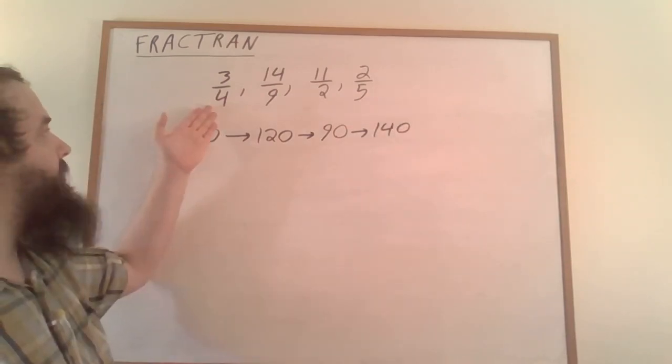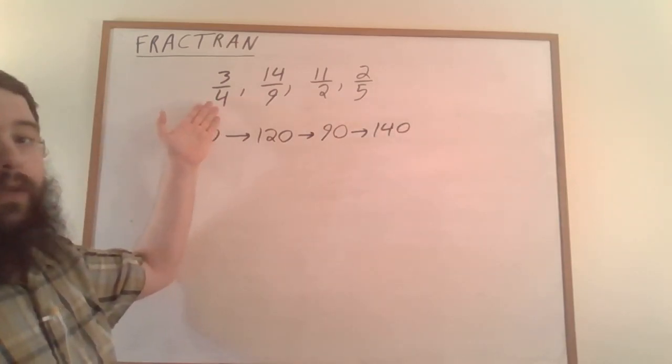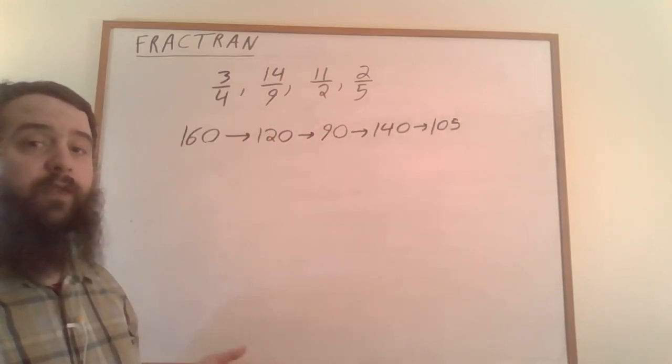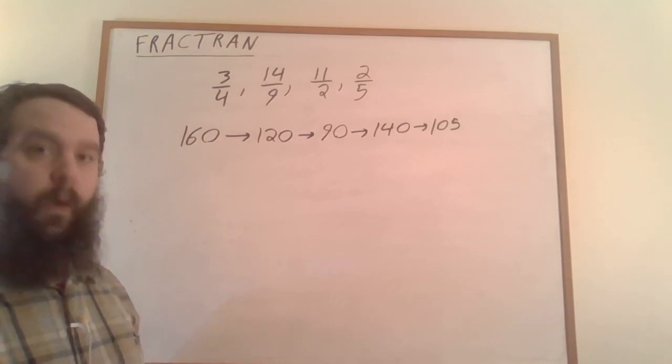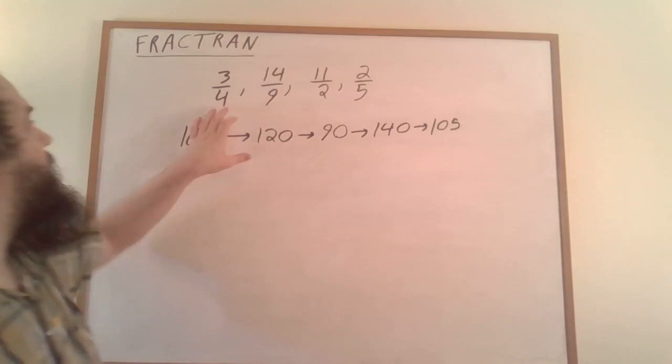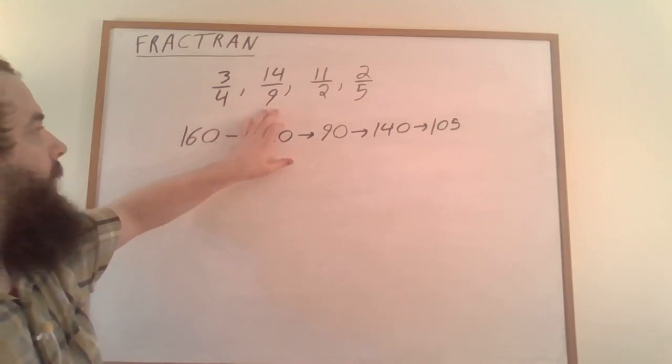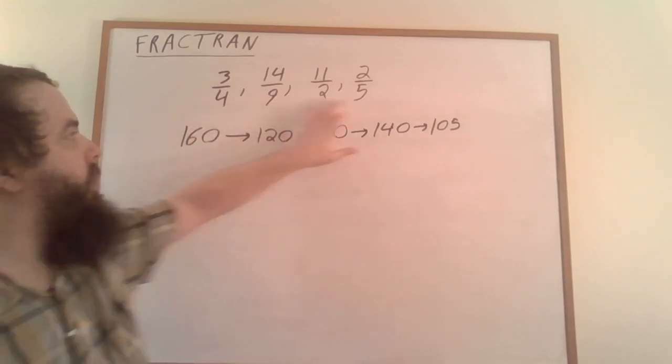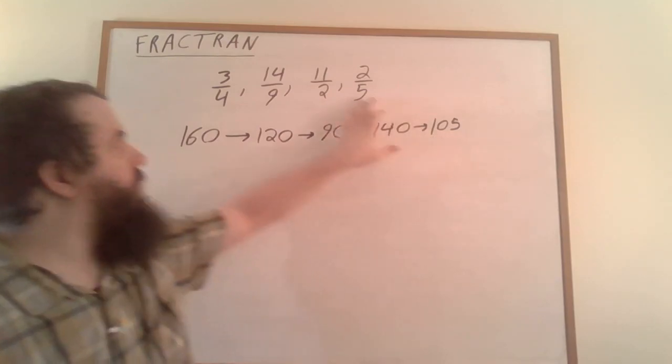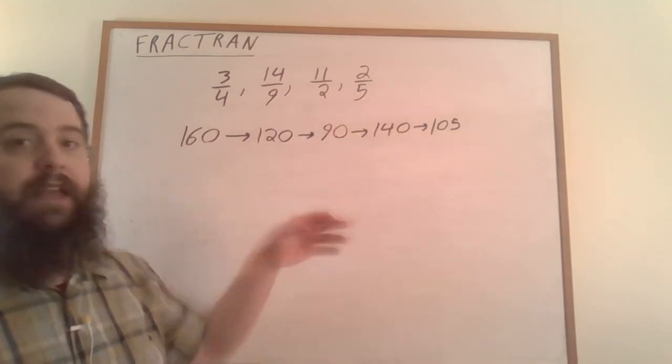140 is divisible by 4, so that's the first fraction again, and 3/4 of 140 is 105. We apply the process again. 105 is not divisible by 4, 9, or 2, but it is divisible by 5, so we multiply 105 by 2/5.